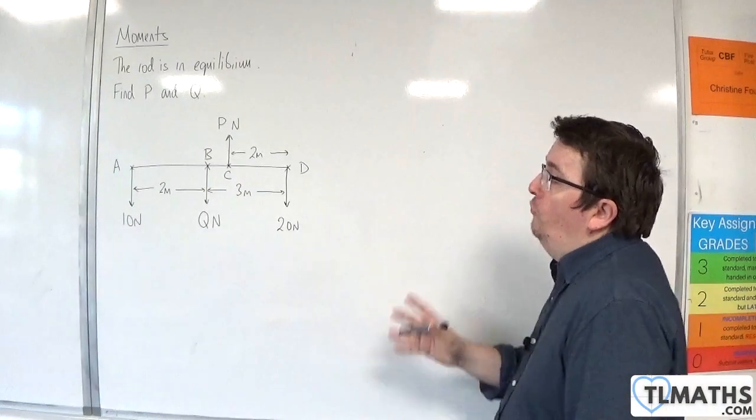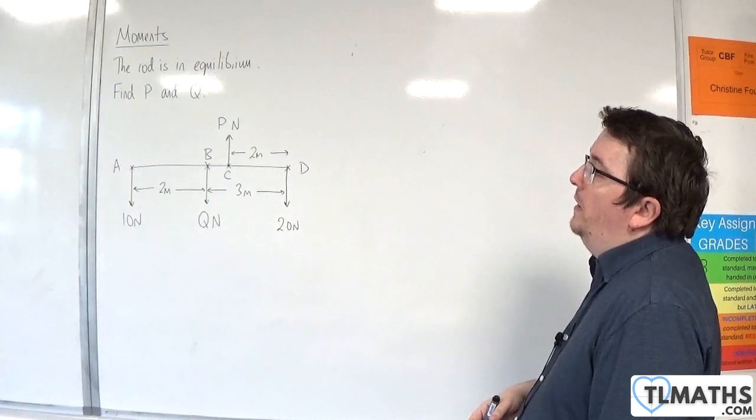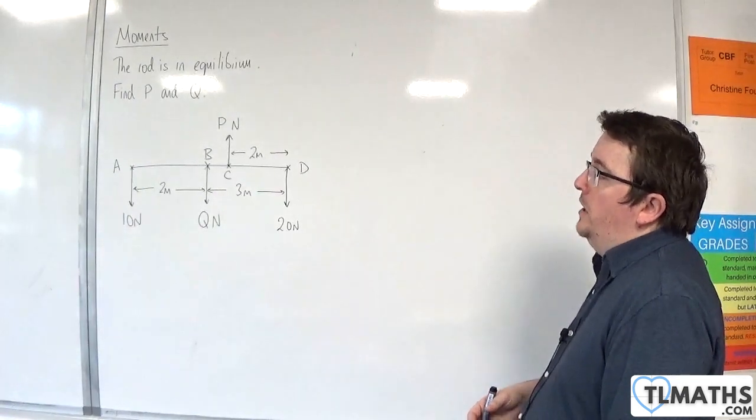In this example, we have a horizontal rod in equilibrium. We need to find P and Q.